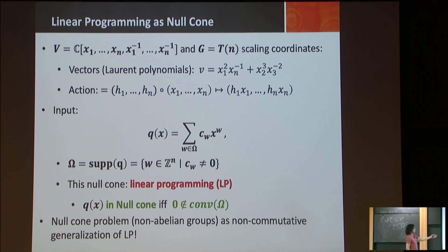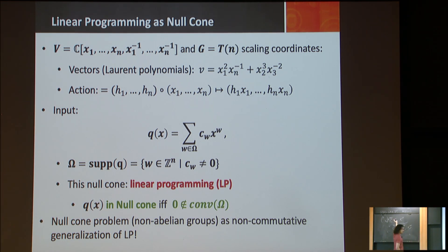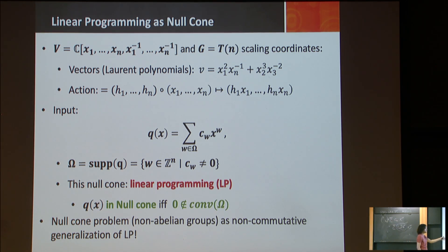So we have this null cone problem — it essentially captures our linear programming problem for commutative groups, since the torus group is commutative. We can generalize this to non-commutative groups: the null cone problem can be seen as a non-commutative generalization of linear programming.